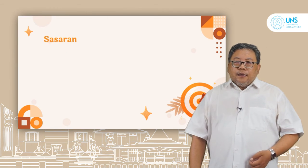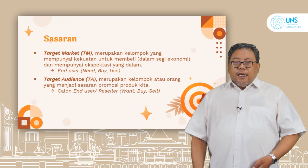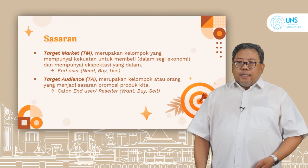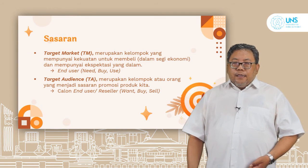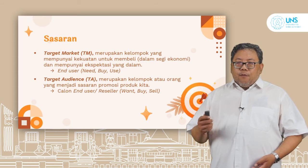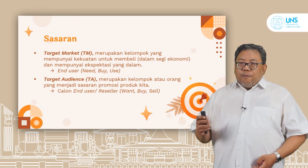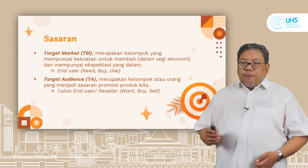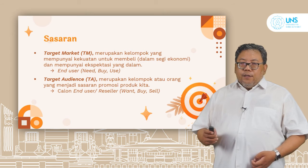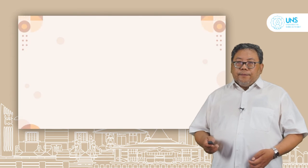Berikutnya adalah menentukan sasaran. Di dalam penentuan sasaran ada dua hal yaitu target market dan target audience. Target market merupakan kelompok yang mempunyai kekuatan untuk membeli dalam segi ekonomi dan mempunyai ekspektasi yang dalam. Target market tersebut disebut sebagai end user — dia bisa melakukan need, buy, dan use. Berikutnya adalah target audience atau TA, merupakan kelompok atau orang yang menjadi sasaran produk kita, dia adalah calon end user atau reseller, yang dibutuhkan adalah want, buy, dan sell.